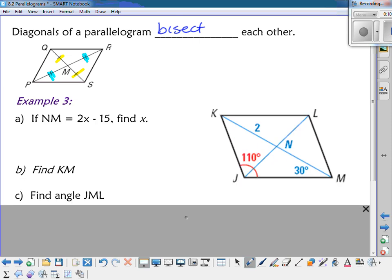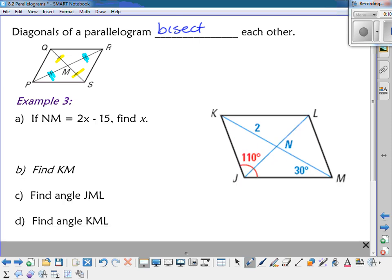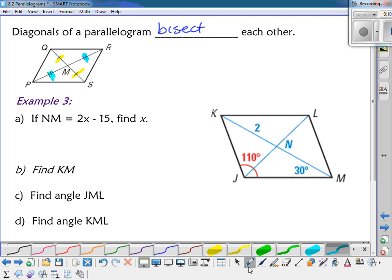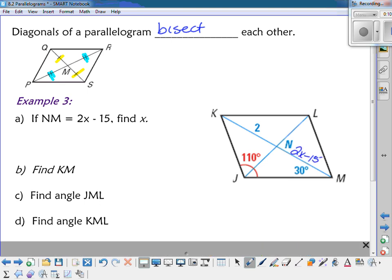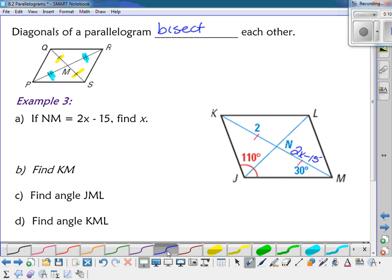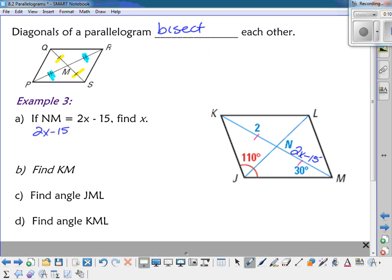So we can solve the problem then using that. Example 3. If NM is equal to 2x minus 15, we're going to find the value of x. So NM is this segment here. So if this is 2x minus 15, well, I know that KN and NM are congruent to each other. So that means that 2x minus 15 is going to have to equal 2. So adding 15 to both sides, I get that 2x is 17. And then if we divide by 2, x would be 8.5.